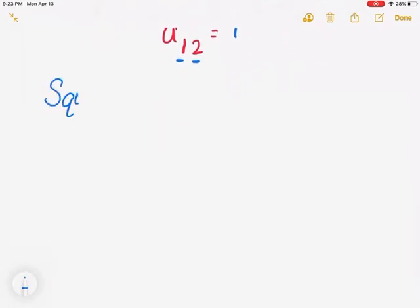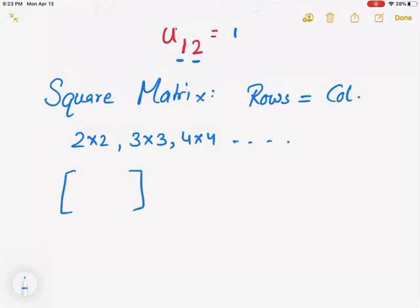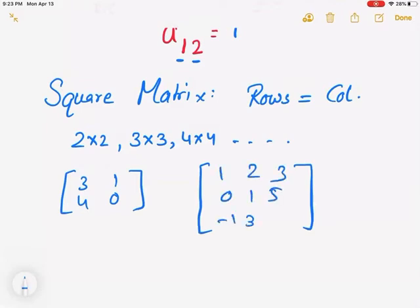A few more vocab terms. Next is called a square matrix. A square matrix is when the number of rows equals the number of columns — so 2 by 2, 3 by 3, 4 by 4, and so forth. A 2 by 2 would look something like: 3, 1, 4, 0. A 3 by 3 would be 3 rows and 3 columns: 1, 2, 3, 0, 1, 5, negative 1, 3, and 5. I just made those numbers up to show you an example of each different type.